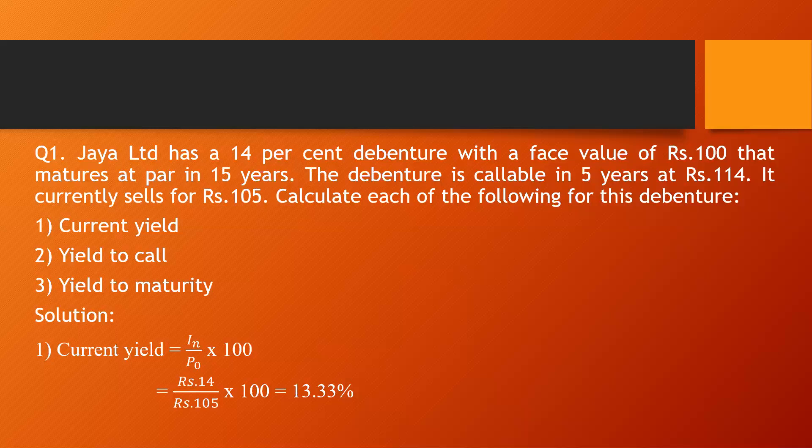We compare yield to call and yield to maturity and choose the one with the higher rate of return. Now let's work out some problems. JR Limited has a 14% debenture with a face value of rupees 100 that matures at par in 15 years. The debenture is callable in 5 years at rupees 114 and currently sells for rupees 105. We are required to calculate the current yield, yield to call, and yield to maturity.